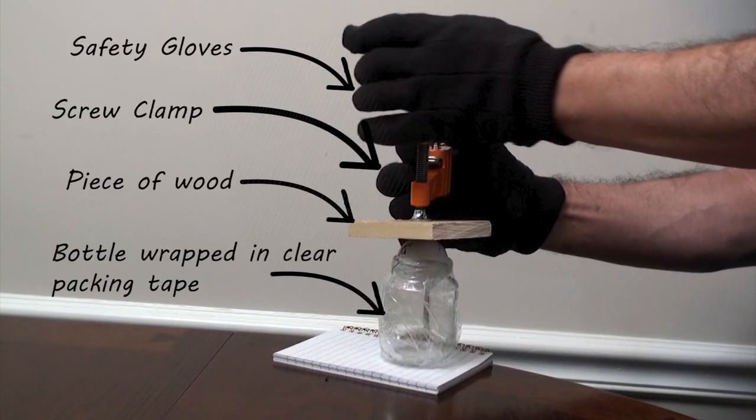For safety purposes, wrap the bottle in packing tape. Place the bottle on a piece of wood or something similar. Place the golf ball inside the bottleneck, place a piece of wood on top of the bottle, and start pressing down.